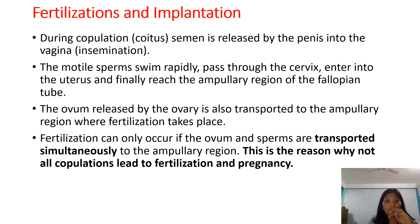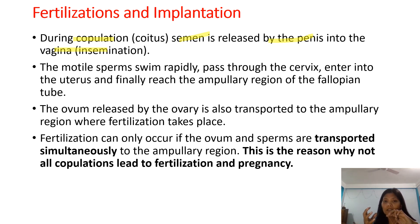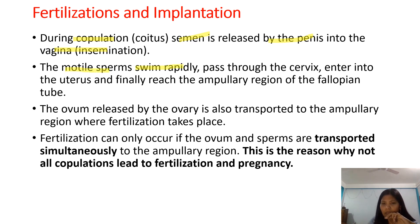When we talk about fertilization, during coitus or copulation, semen is released by the penis into the vagina. This is what we call insemination. When you have a motile sperm, it swims rapidly.